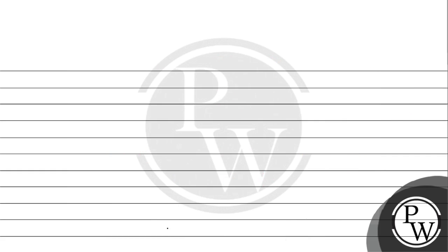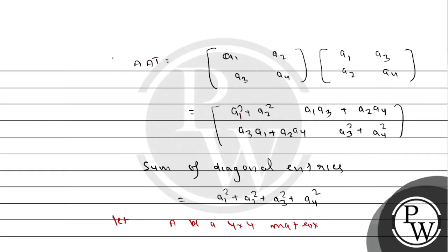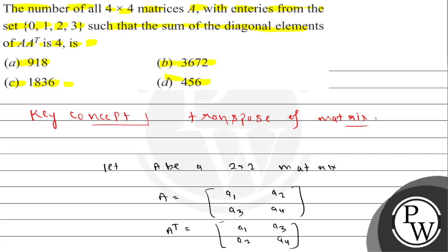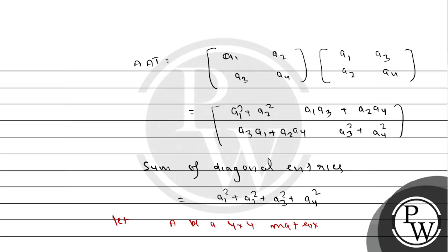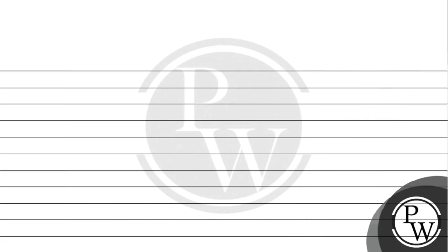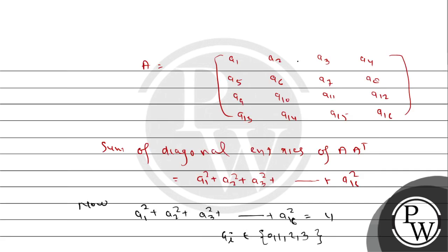So here we have such a 4×4 matrix. We need to find the number of all 4×4 matrices where the sum of the diagonal entries of AA^T equals 0. The number of such matrices is equal to the count where, if we have entries A1, A2, A3 — all 4 elements — from {0, 1, 2, 3}.